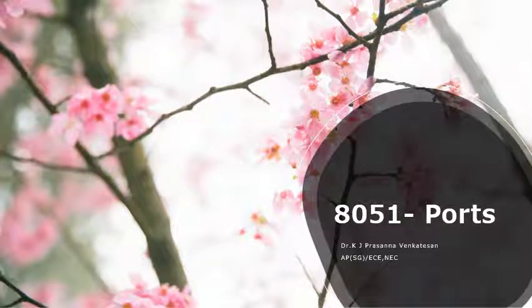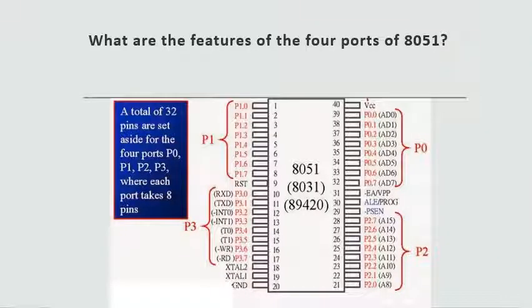The AT51 has four important ports: Port 0, Port 1, Port 2, and Port 3. These ports allow the microcontroller to connect with the outside world. The four ports of AT51 microcontrollers have certain specific functions and corresponding features. In this video, we will take a look at the purpose of each of these ports, and first know what are all the features of the four ports of AT51.